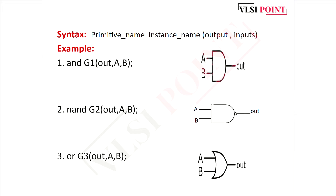First of all, you have to write the primitive name - for example, nand gate - then the instance name, and then the output and input ports. Some examples: and gate, nand, and or. For and gate with inputs a and b and output out, the syntax is: and g1 out, a, b. Similarly for nand gate: nand g2 out, a, b. In this manner you can write the syntax.